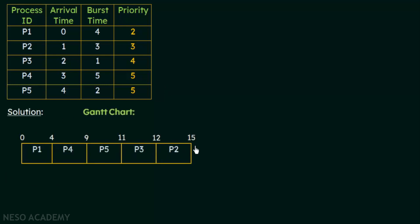Here is the Gantt chart for processes P1 to P5. P1 arrives at time 0, so it is the first process to arrive. Since there were no other processes at that time, P1 gets the CPU and begins its execution. It will execute for 4 milliseconds, which is the burst time of P1. No processes will disturb P1 until it completes its execution, because this is non-preemptive priority scheduling. The priority of P1 is 2, but since there were no other processes at that time, we don't need to worry about priority for this case.